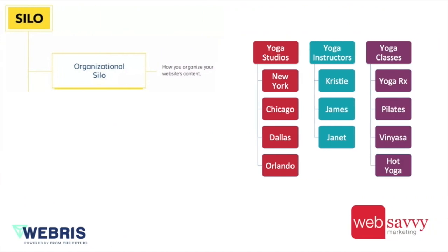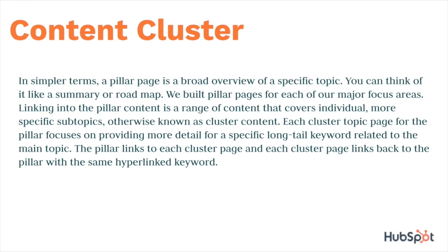Here's what that looks like. Here's an example from Web Savvy Marketing — having yoga studios siloed under the yoga studios category, having the instructors instead of just having them all live on the blog with random posts, we're starting to silo these together and structure them. Putting these together in a way that makes sense — whether through the navigation, through our linking structure, or through categories and tags — we start to show Google and also show humans what goes where and what things are.